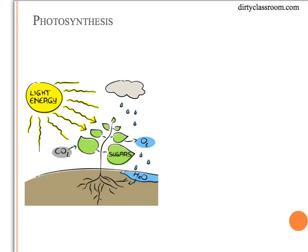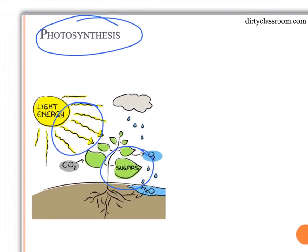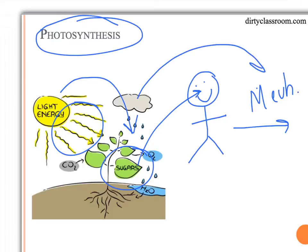Moving away from alternative energy, we can talk about energy transformation in our everyday lives. Radiant energy from the sun causes plants to undergo photosynthesis — the process of changing radiant or light energy from the sun into sugars, which are a type of chemical energy that we as humans can eat. We eat these sugars and use that chemical energy in order to move, which is a type of mechanical energy. So we can see radiant converting to chemical, and chemical converting to mechanical.